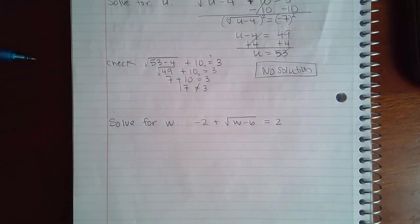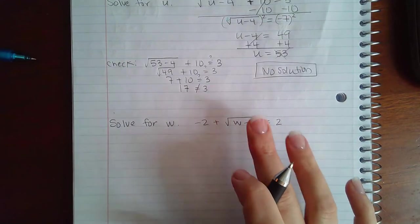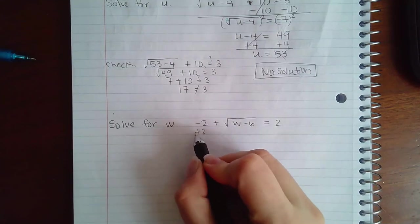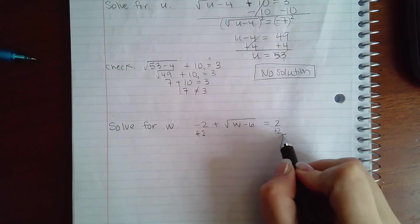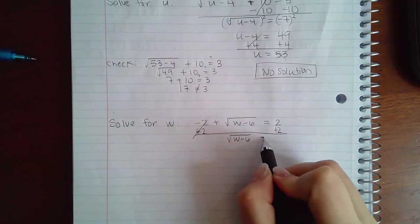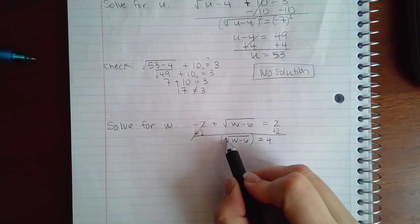Similarly for this problem I want to get the square root part by itself so I can apply the power on both sides. So here I'm actually going to add 2 because it's a negative 2, so I get the square root of w minus 6 equal to 4.